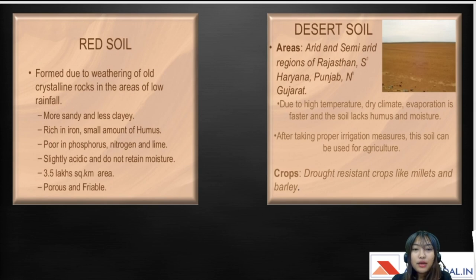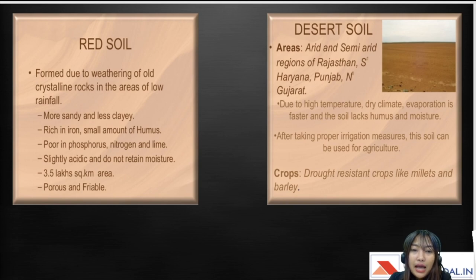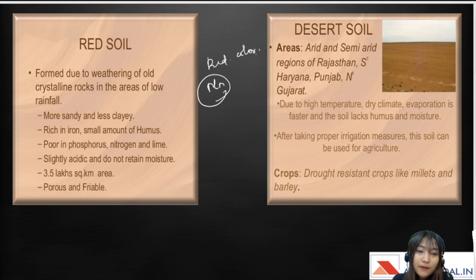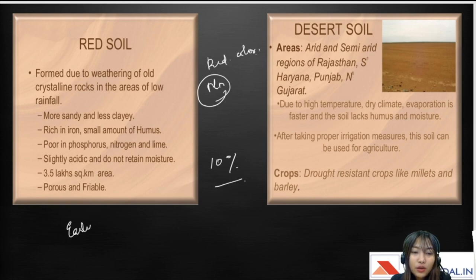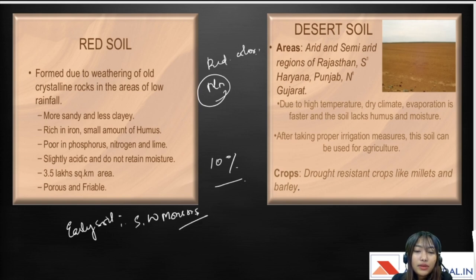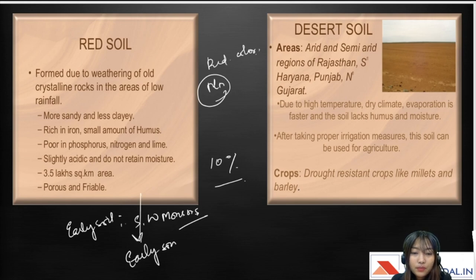Red soils are formed during the weathering of old crystalline rocks in areas of low rainfall. They are more sandy and less clayey, rich in iron which creates the red color, and also rich in manganese. They are poor in phosphorus, nitrogen, and lime, slightly acidic, and do not retain moisture well. They cover about 3.5 lakh square kilometers — about 10 percent of India's area. They are porous and friable, and are also known as early soils because during light and frequent rains of the southwest monsoon they permit early sowing compared to other soils.